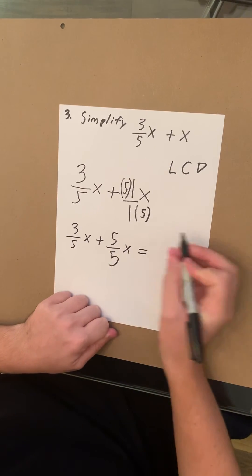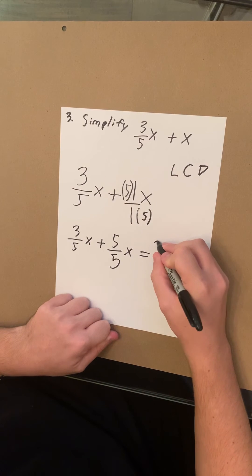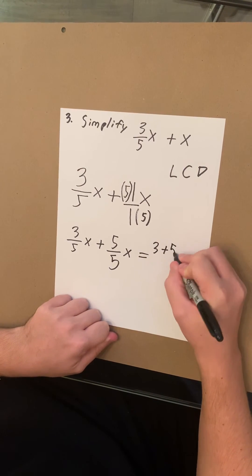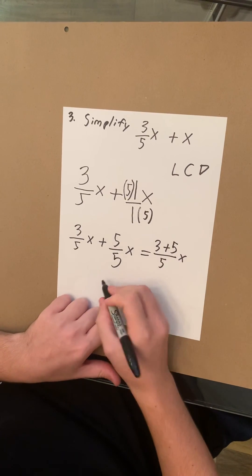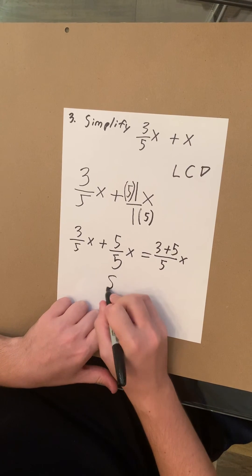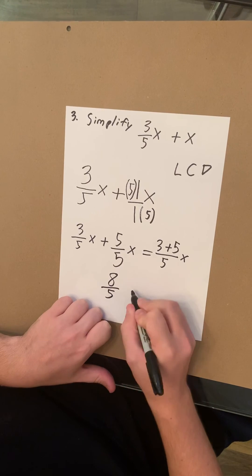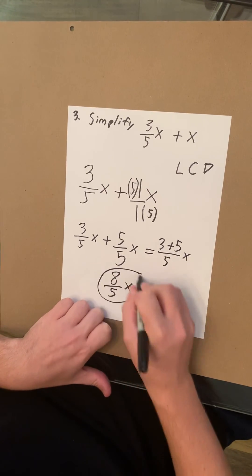So your answer is just gonna be 3 plus 5 over 5x. And finally you're gonna add those together, and you get 8 over 5x. That's your answer.